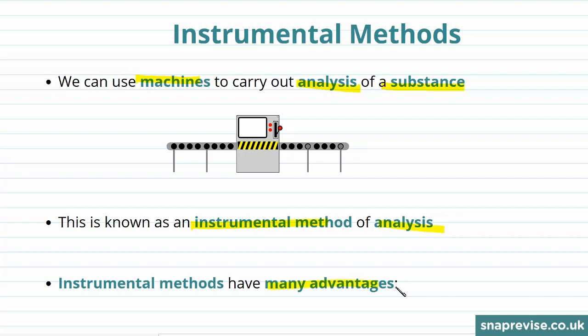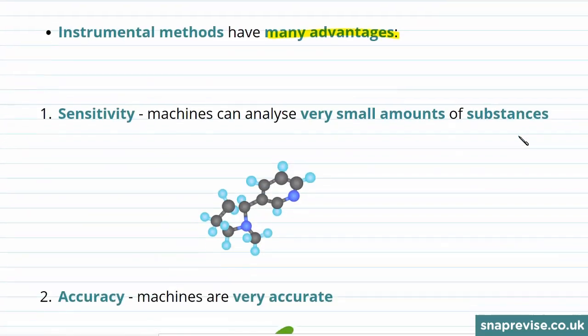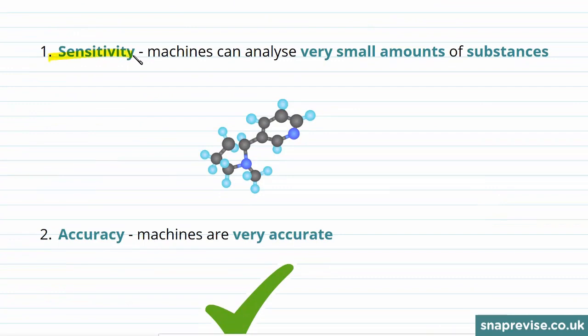Instrumental methods have many advantages over simple flame tests or precipitation reactions, for example. Firstly, sensitivity. Machines can analyze very small amounts of substances, which is helpful if we get a lot less product in our reaction than we hoped for.